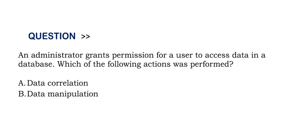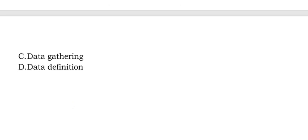Option A: Data Correlation. Option B: Data Manipulation. Option C: Data Gathering. And Option D: Data Definition.